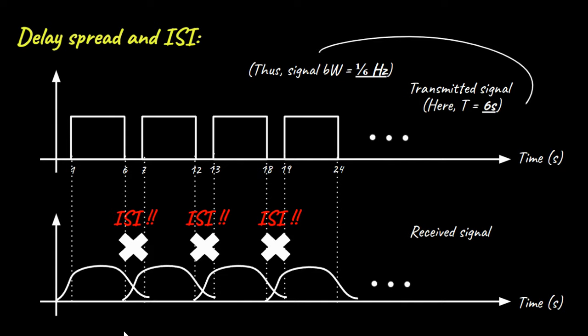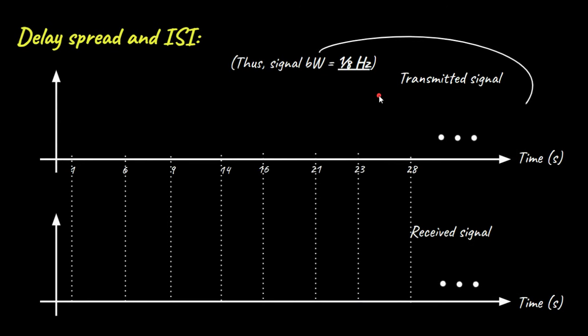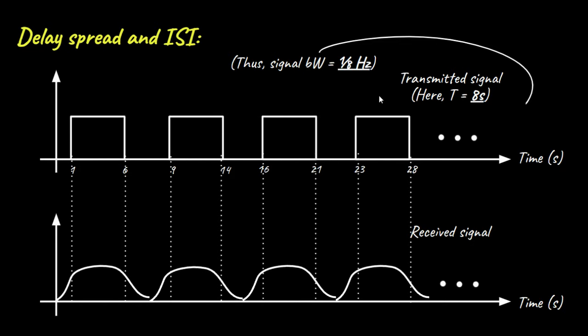One very intuitive way to reduce ISI now is to space these subsequent symbols sufficiently at the transmitter end. To achieve this, we can increase the symbol time T from 6 seconds to 8 seconds which also leads to a corresponding decrease in signal bandwidth from 1 upon 6 hertz to 1 upon 8 hertz. However, while this as seen in this diagram will certainly prevent ISI, it leads to a very slow data rate and is absolutely incompatible with our modern high-speed data requirements.